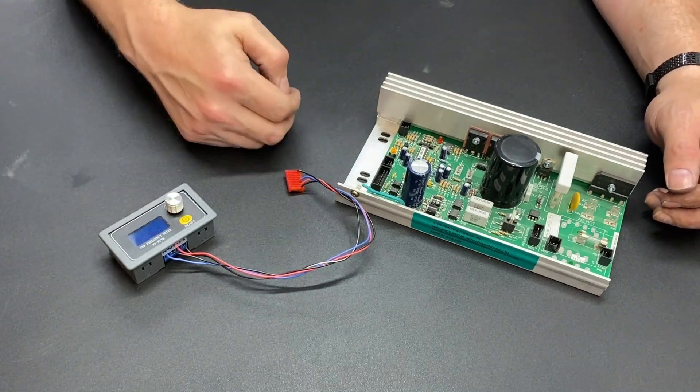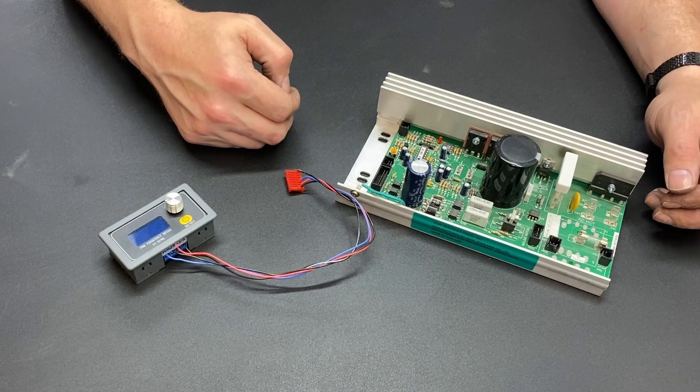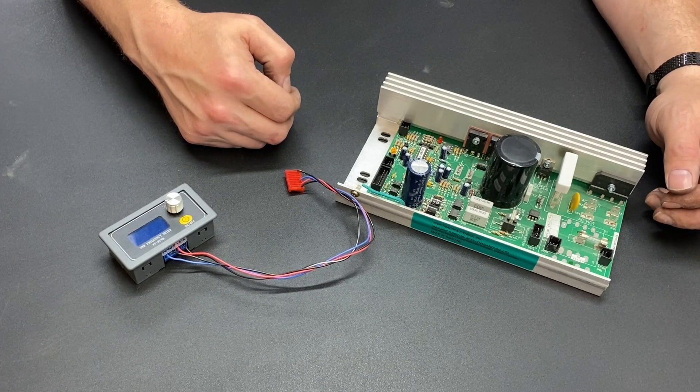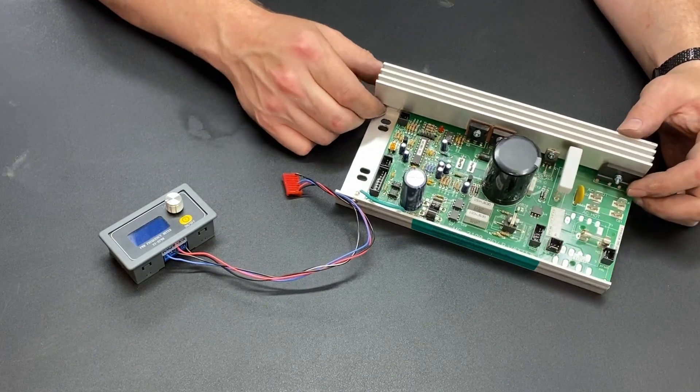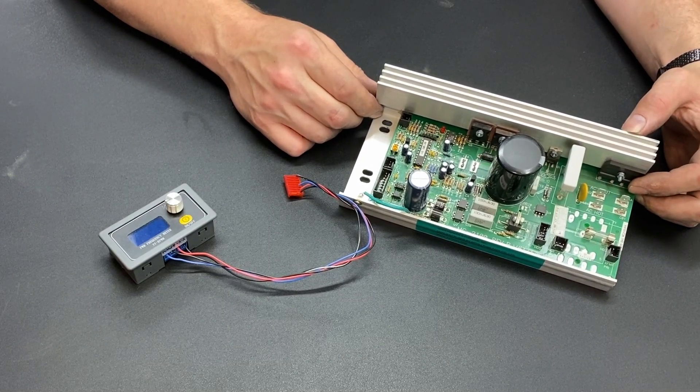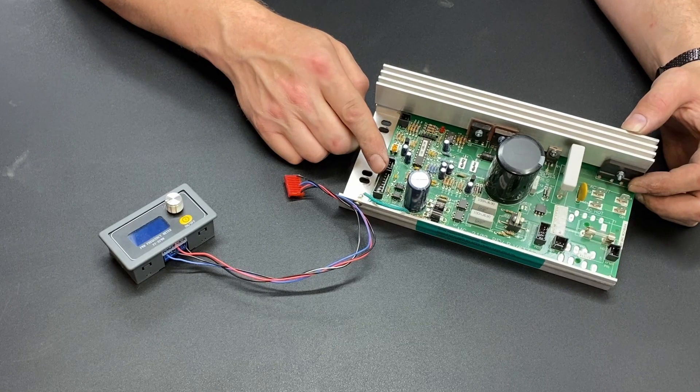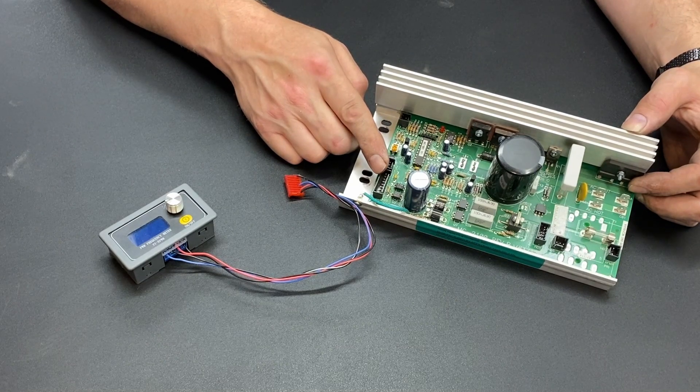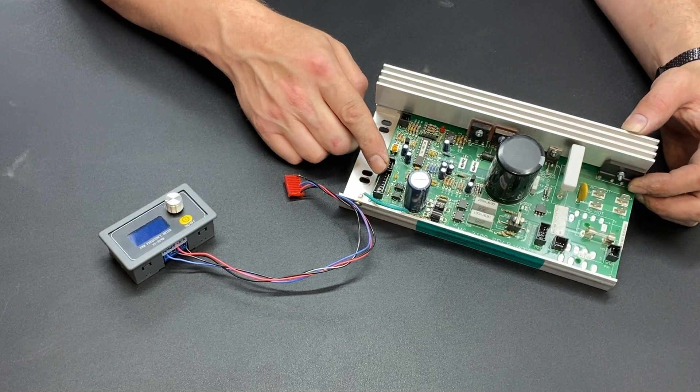That on-off pulsing is what makes something a Pulse Width Modulator. Now in the case of a power supply, a Pulse Width Modulator is used to control voltage. The power coming out of this, turning off and on, has the effect of reducing the voltage.